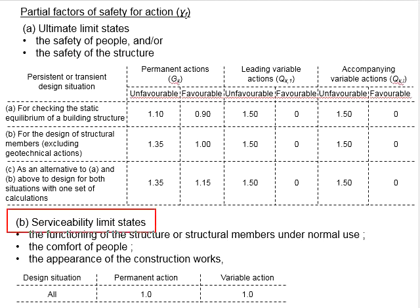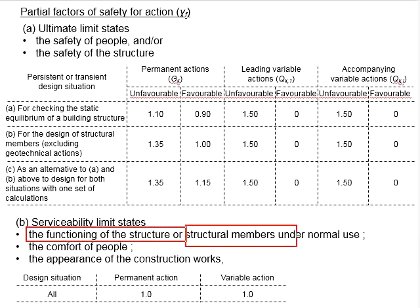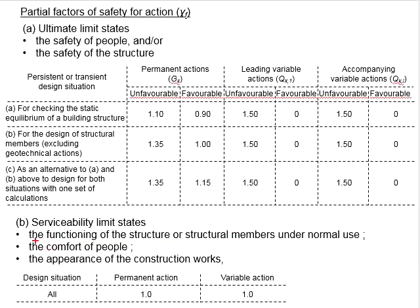Next is the serviceability limit state, which represents the functioning of structures or structural elements under normal use. It is meant for the comfort of people and the appearance of structures. The factor of safety for the serviceability limit state is taken as 1.0 for both permanent and variable actions.